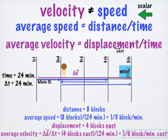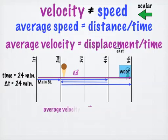We see that average velocity is equal to a vector, displacement, divided by a scalar, time. This means that average velocity is a vector also, which we will call v-average, or v.